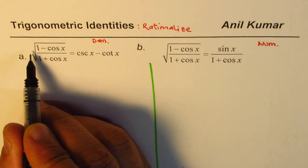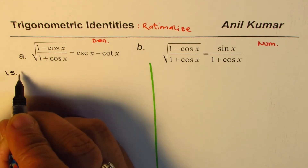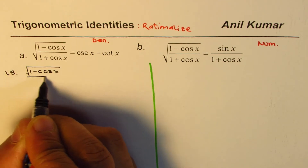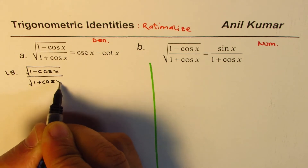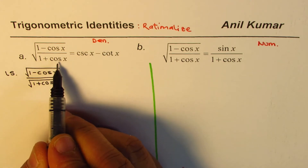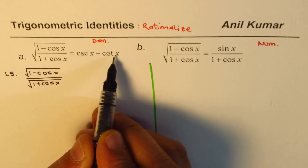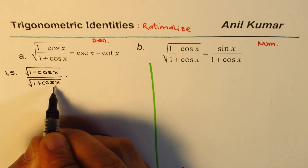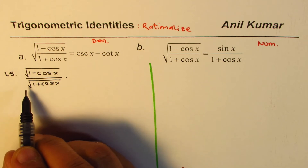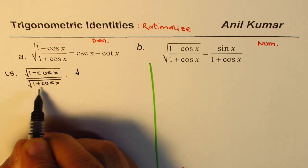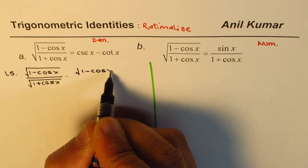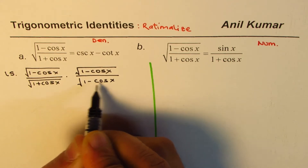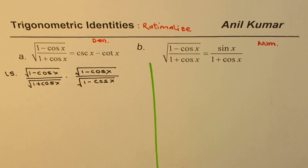We begin with the left side, writing it as square root of (1 minus cos x) over square root of (1 plus cos x). I have decided to rationalize the denominator because what we need on the right side has sin x in the denominator — cotangent is cos over sin. Rationalizing the denominator means we multiply and divide by the conjugate of the denominator, which is 1 minus cos x. This first step is extremely important to understand as we move forward in proving trigonometric identities.